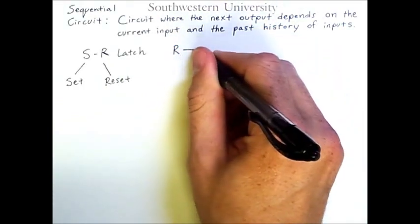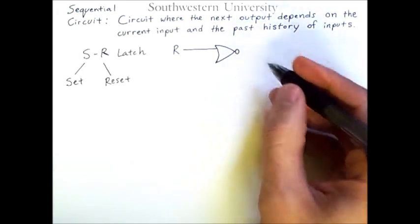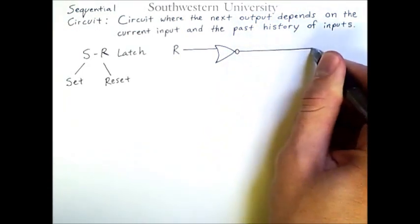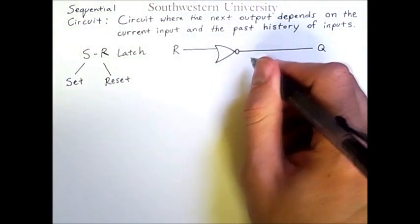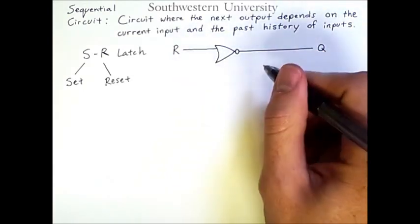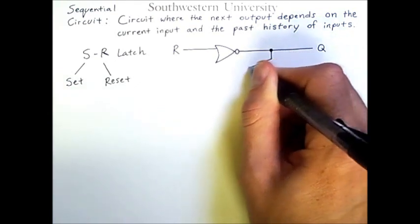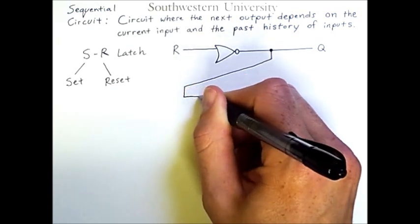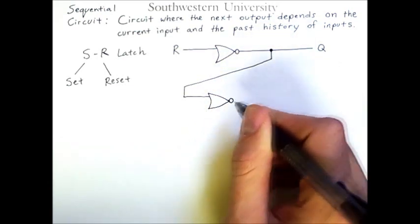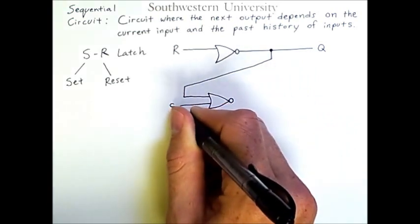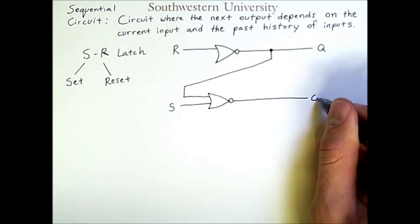We have R coming in to a NOR gate, so we have the circle at the end to represent negation, and then this output goes along and we'll call this output Q. This is the state of the circuit. However, I haven't drawn a second input here yet. Before I do that, note that the output here Q is going to branch off and then go back over here and be an input to another NOR gate. Now the second input to this NOR gate will be S, the set bit.